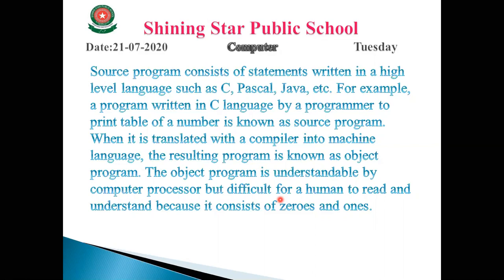The computer only understands machine language — binary digits 0 and 1. The computer cannot understand printf, scanf, cin, or cout. So we have to convert it into machine language. The compiler converts the source program into the object program. We — humans — can only understand the source program, while the computer can only understand the object program, which consists of 0s and 1s.